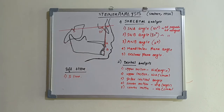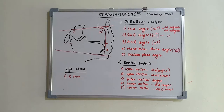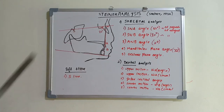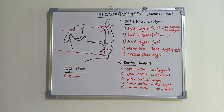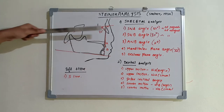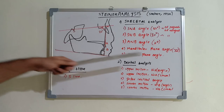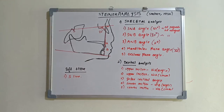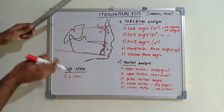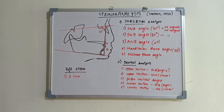The next skeletal parameter is the mandibular plane angle. In Down's analysis the reference was the FH plane, but in Steiner's analysis it is the SN plane. So it is the angle between the SN plane and the mandibular plane, with a mean value of 32 degrees. If the angle is lesser, the person has a horizontal growth pattern; if the angle is greater than 32 degrees, the person has a vertical growth pattern.